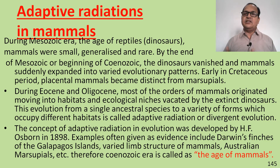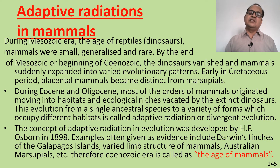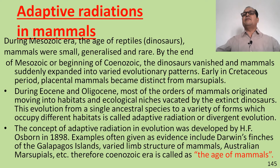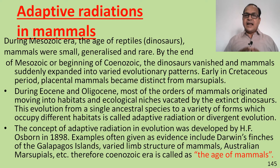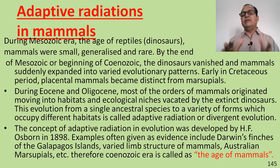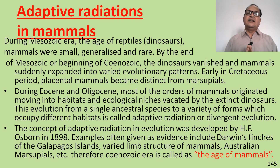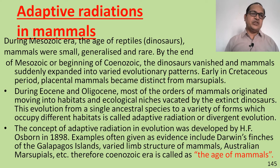The opposite of divergent evolution is convergent evolution. In convergent evolution, different types of species come close to each other in the same environment and become morphologically similar. This is called convergent evolution.